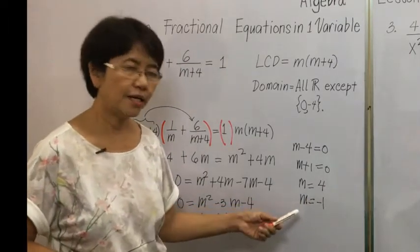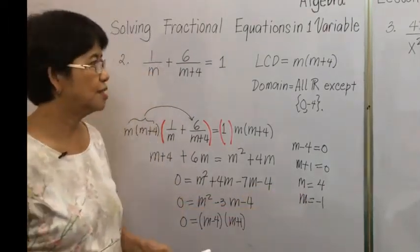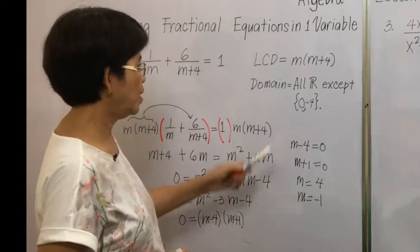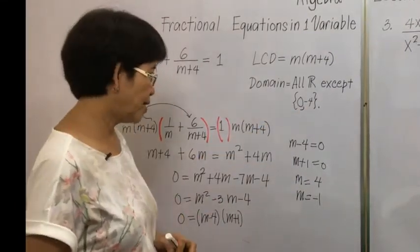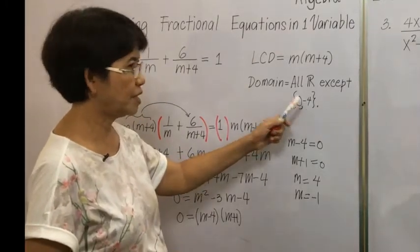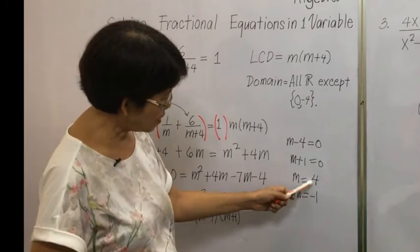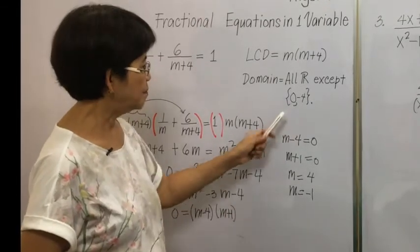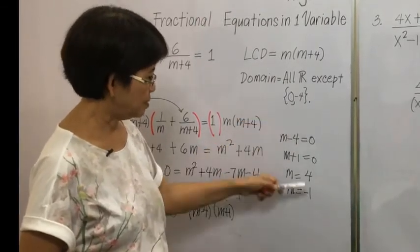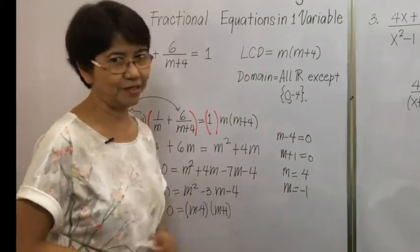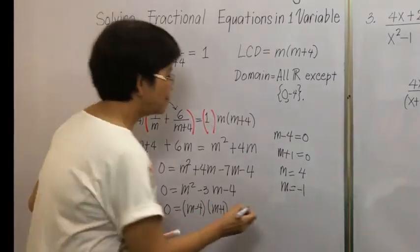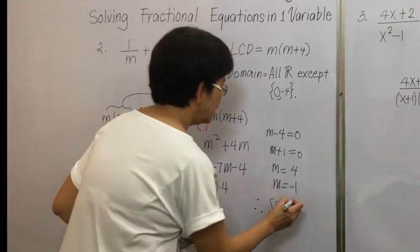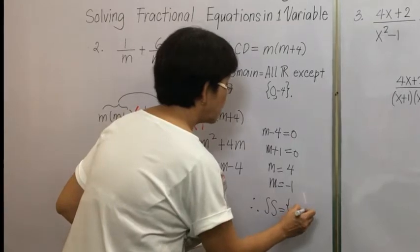Before accepting these roots, we compare them to the domain. The exceptions are 0 and negative 4. Since positive 4 and negative 1 are not in the exception list, we accept both values. Therefore, the solution set is {negative 1, 4}.